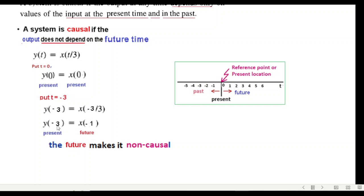Where are we? We are at y or the time t equals -3, so we are at this point. The input is at -1, ahead of this, that is future of the present time. With respect to -3, -1 is future, and therefore this is a non-causal system.